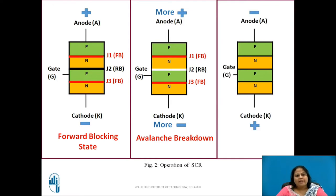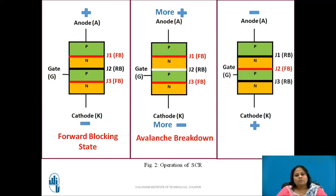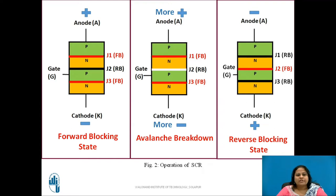When the anode is made negative with respect to the cathode, junctions J1 and J3 become reverse biased and J2 becomes forward biased. These reverse biased junctions J1 and J3 do not allow any current to flow through the device. But a small leakage current flows because of the drift of charges. This current is again insufficient to turn ON the device. This is known as the reverse blocking state or OFF state of the device.